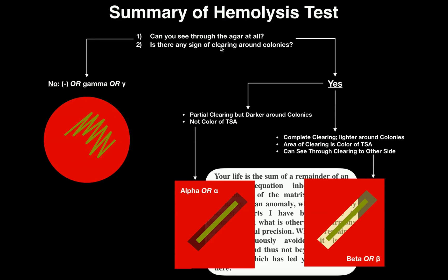On the other hand, if your answer is yes — there is clearing around the colonies — then you either have alpha or beta hemolysis, and you have to decide which one it is. If you have only partial clearing around the colonies, meaning there is definitely clearing of the red blood cells but it's a little bit darker around the colonies and not the color of TSA, then you have alpha hemolysis. You'll see some clearing, but you should not be able to see through the plate clearly to the other side. The area around the streak will still be a little bit dark.